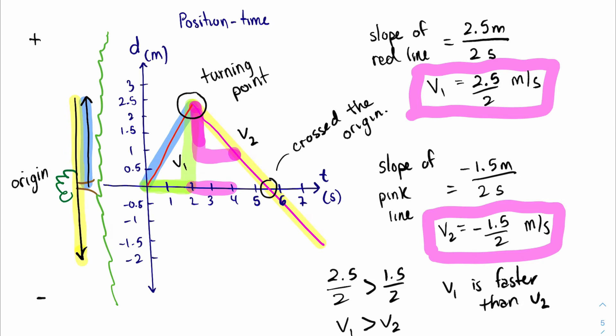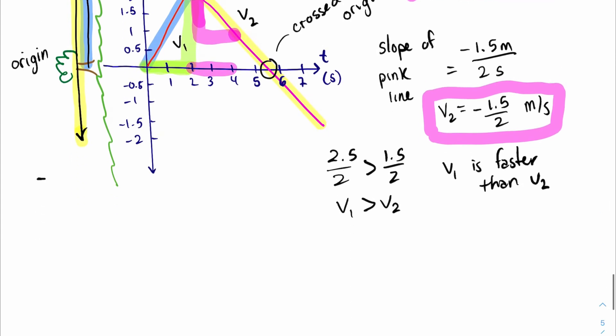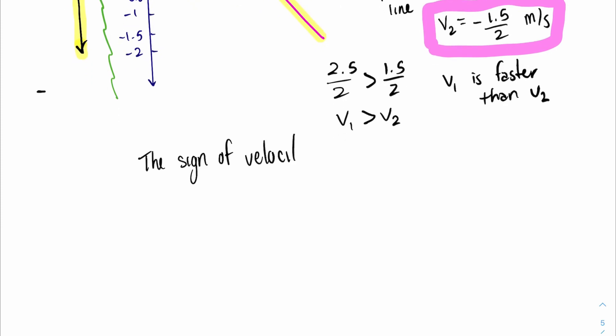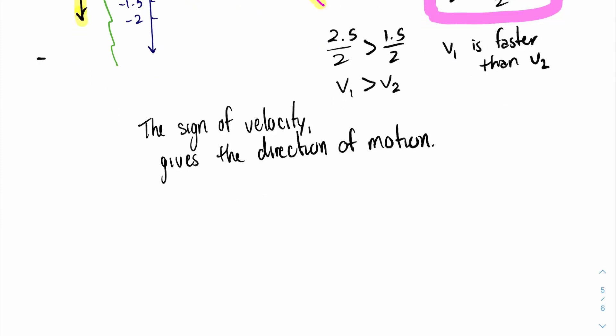So the sign of the velocity tells you the direction of motion. Let's make a note of this. The sign of the velocity gives the direction of motion.